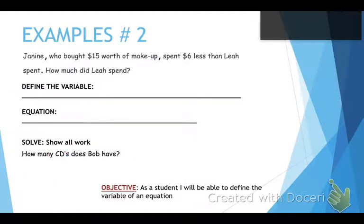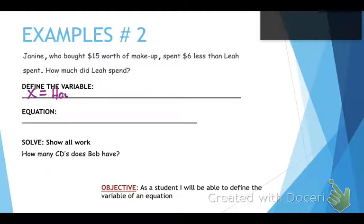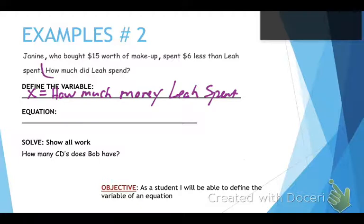Example number two. Janine, who bought $15 worth of makeup, spent $6 less than Leah spent. How much did Leah spend? We don't know what Leah spent, so that's the unknown. We'll use X — we don't use capital L because it looks like a one. X equals how much money Leah spent. Remember, be very, very specific — it's not just 'X equals Leah,' it's how much money Leah spent. The more descriptive, the better.